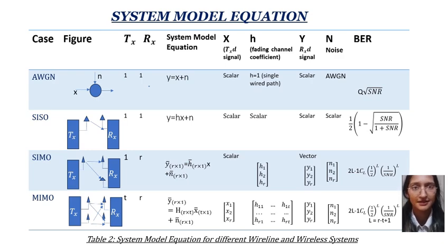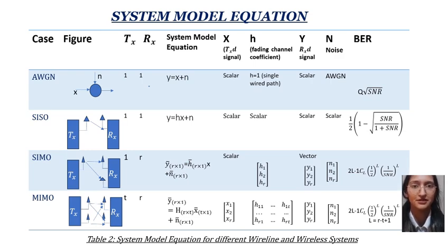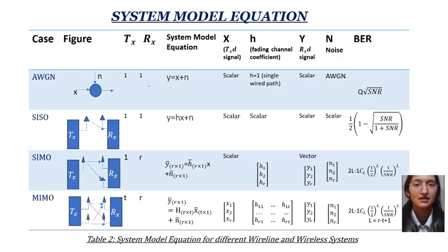Here, Tx is the transmitting antenna, Rx is the receiving antenna, x is the transmitted signal, h is the fading channel coefficient which represents all the effects that the wireless channel has on the transmitted signal — including attenuation, phase shift, and multipath propagation. Y is the received signal, and n is the noise added to the transmitted signal. In the first case of AWGN, the system model equation is y = x + n. In this case, h = 1, as there is only a single wired path. Here, y, h, x, and n are all scalars.